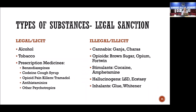Substances can be legal or illicit. Legal substances include alcohol, tobacco, and medications like benzodiazepines — alprazolam, diazepam, lorazepam — and codeine-containing cough syrups, tramadol, and tapentadol. Illicit substances include cannabis, brown sugar or smack or heroin, and stimulants like cocaine, amphetamine, and methamphetamine. Hallucinogens include LSD and ecstasy, and inhalants like glue and whiteners are considered a poor man's drug used especially by street children.